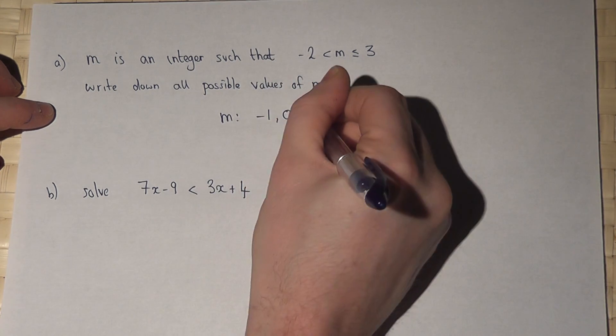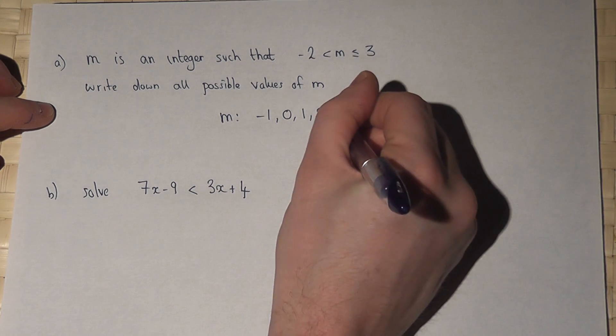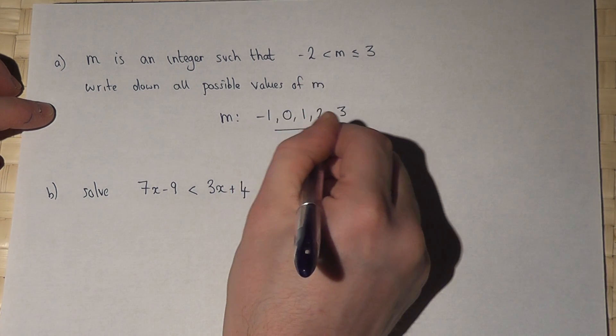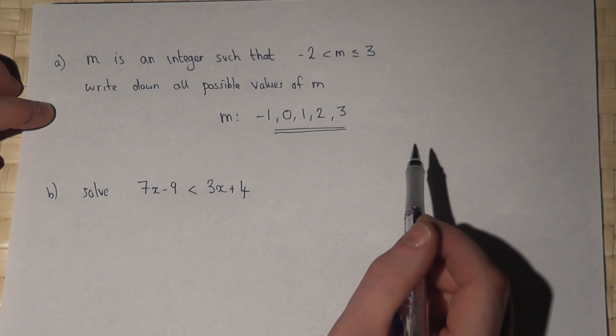So m could be -1, 0, 1 or 2, but I can include 3. So this list of whole numbers are the integers which satisfy the given inequality.